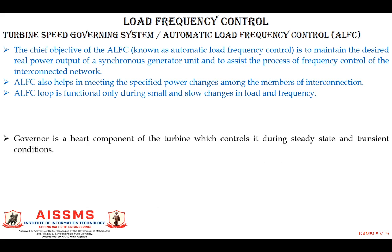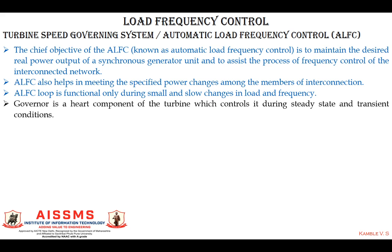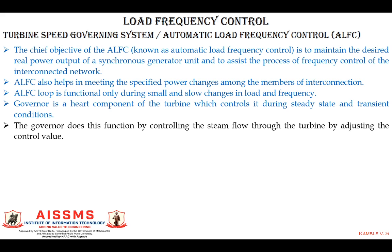The governor is the heart component of the turbine, which controls it during steady state and transient conditions. The governor controls the input flow to the turbine — that is, to the generator — and when you control the turbine, you are controlling the input of the generator, meaning you are controlling the output active power and the frequency, keeping them within desired limits. The governor does this by controlling the steam flow through the turbine, by adjusting the steam input to the turbine.